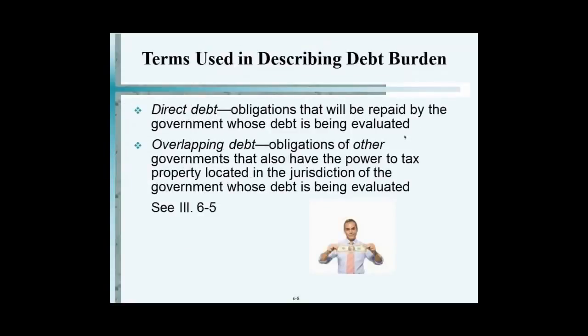Let me give you an example. In New Jersey and many states, towns don't have the liberty to go out and borrow anything that they want. Why? If you were the homeowner in that town and your town went out and borrowed money like crazy to do all these things, who's going to end up paying for that? You, as the taxpayer. So what has happened is in many states, they limit the town on what they can borrow.